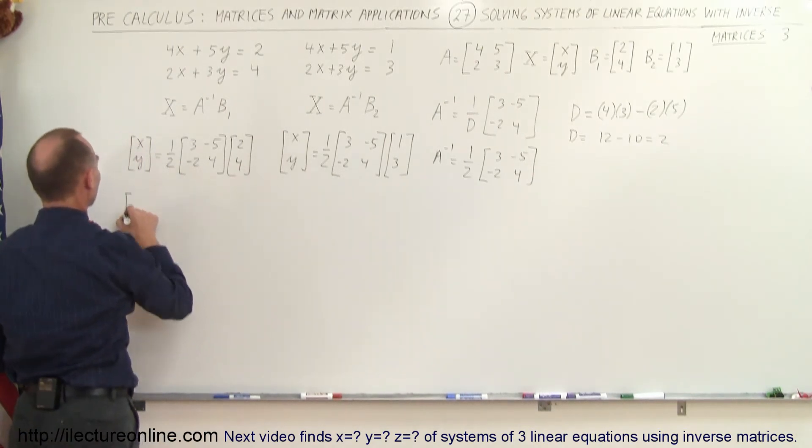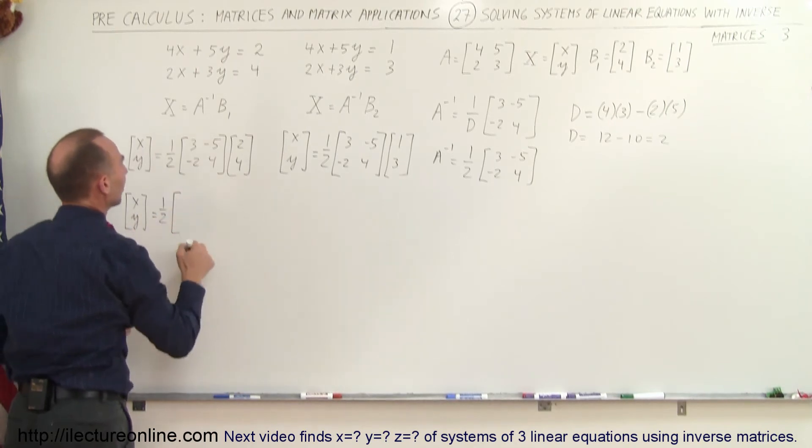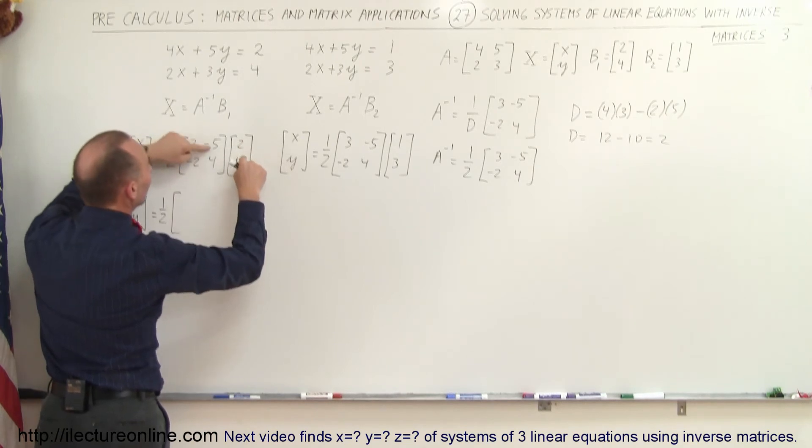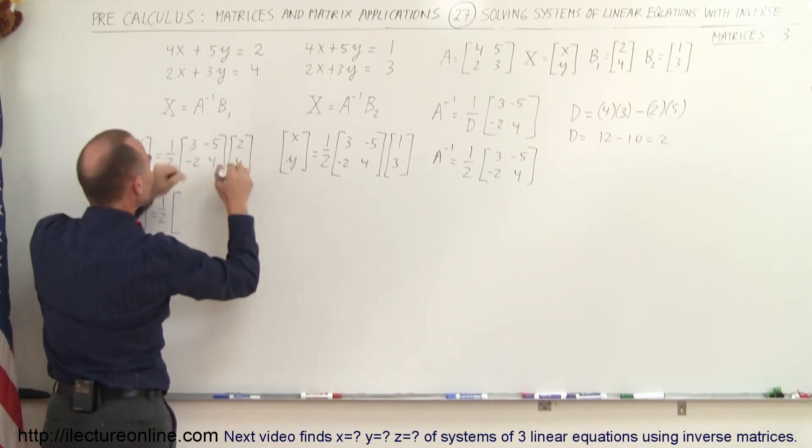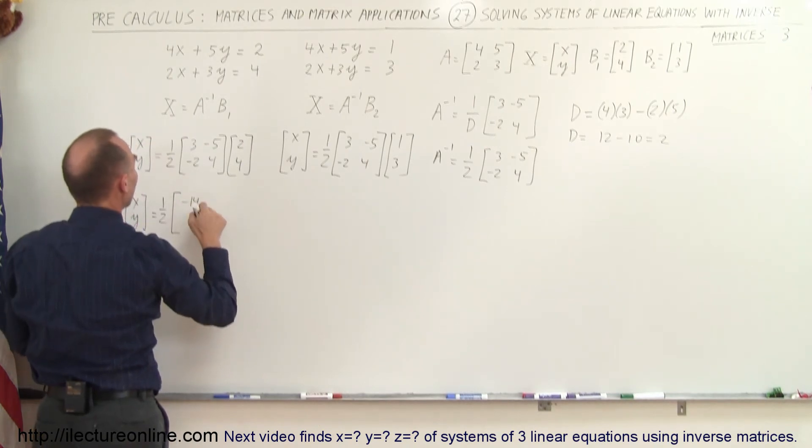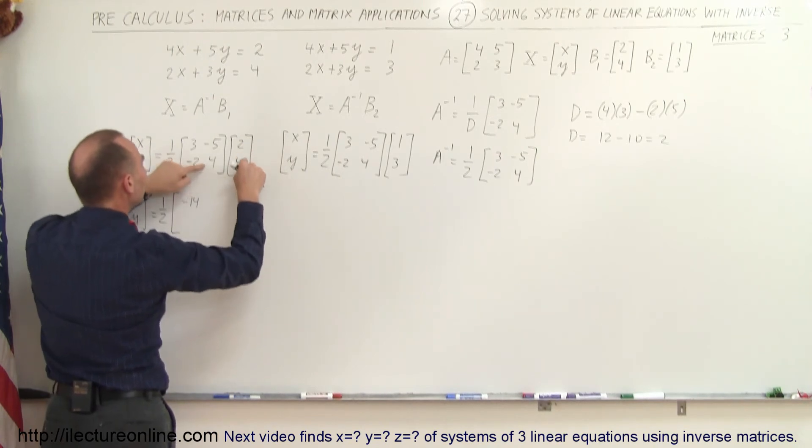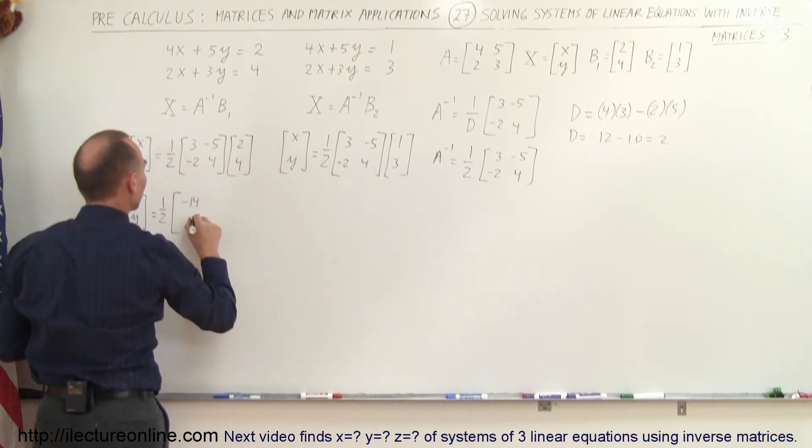So we have the values for x and y is equal to 1 half times—to get the element here we have 3 times 2 is 6, minus 5 times 4 is minus 20, so 6 minus 20 is minus 14. And here to get the second element it would be minus 2 times 2 is minus 4 plus 16, so minus 4 plus 16 is plus 12.